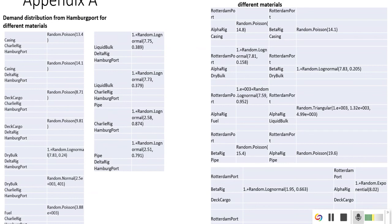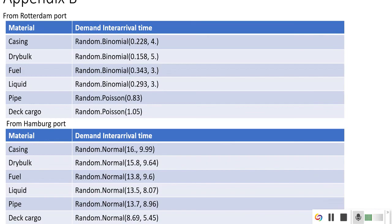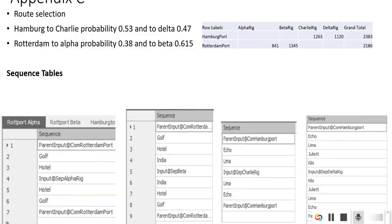In Appendix A, here is the demand distribution for different ports, for different materials from different origin ports to different destinations. Appendix B contains the interarrival time for different materials. Appendix C contains the probability for going from one port to another port from origin port to a particular rig, and the sequence table for going to a particular rig.